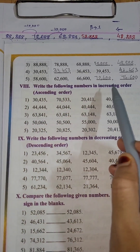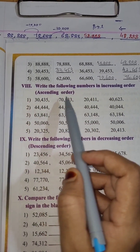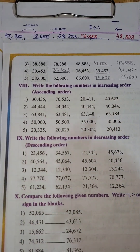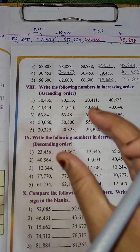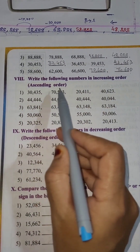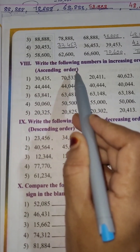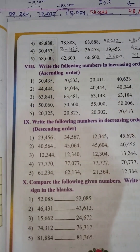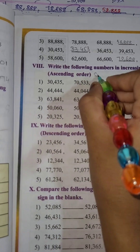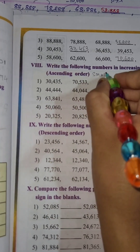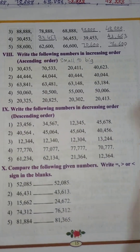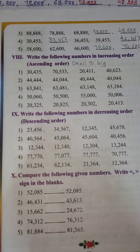Write the following numbers in increasing order, that is ascending order. Increasing means from small to big — it will start from small to big. That is called ascending order. You have to remember this: ascending order means from small to big.